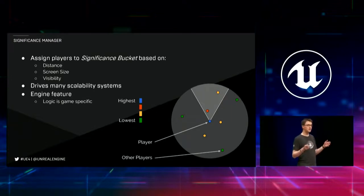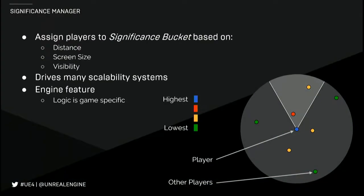The idea here is that we take the players in the level and put them into significance buckets based on a couple of criteria: how far away they are, how large they are on screen, and whether or not we can see them. Players that are very close and visible will be in higher priority buckets; players you can't see or are far away go into lower priority buckets. We set the maximum sizes of these buckets, so even if there's a ton of players near you, they won't all be processed at high quality. This system then drives a lot of other scalability systems. It's based on an engine feature that's been around for a while.